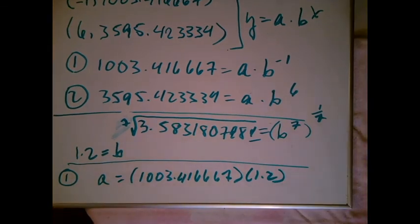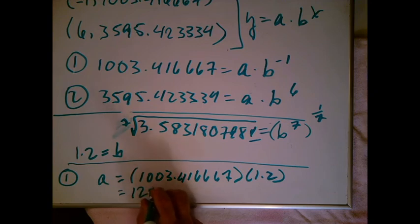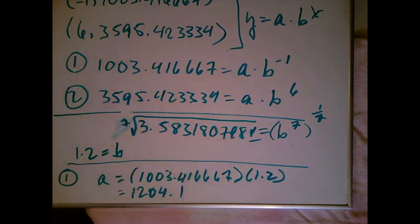And we're going to get, let's see here, 1.2 times 1003.416667 and I get 1204 point one. It's just going to be one.